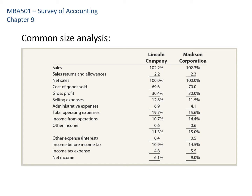Expressing figures as percentages allows us to compare companies of different sizes. As long as they're in the same industry, it can be relevant to compare a $10 million company with a $2 million company. If I assume Madison Corporation is the benchmark and I work at Lincoln Company, I can see that although cost of goods sold has a negative trend, I'm still better than my benchmark. However, both my selling expenses and admin expenses are higher as a percentage of sales than the benchmark — areas I may need to address.